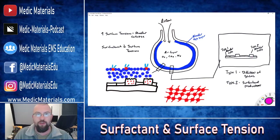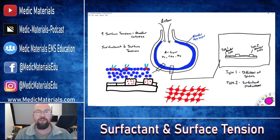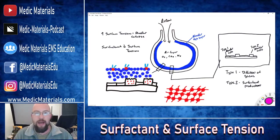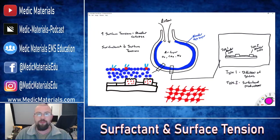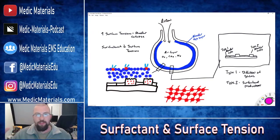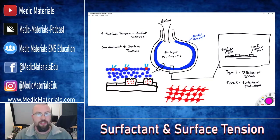Surfactant is just proteins and lipids, or fats, combined to create this myelin sheath-type product — demonstrated here in red. Each of these cuboid Type 2 cells creates surfactant molecules, which then bind together in a myelin sheath-type structure, and that's what really produces the surface tension limiter — that decreased surface tension.